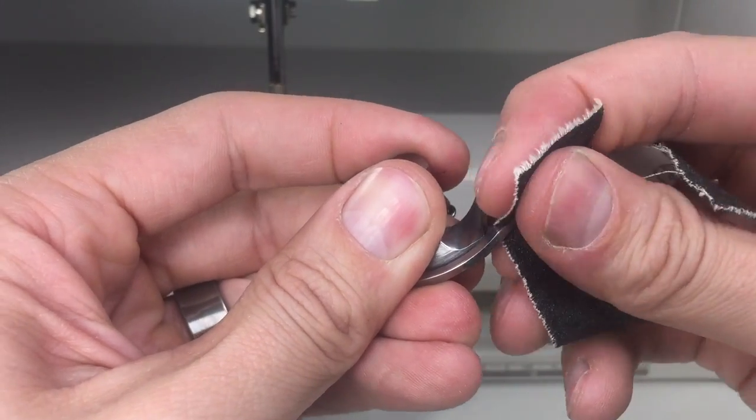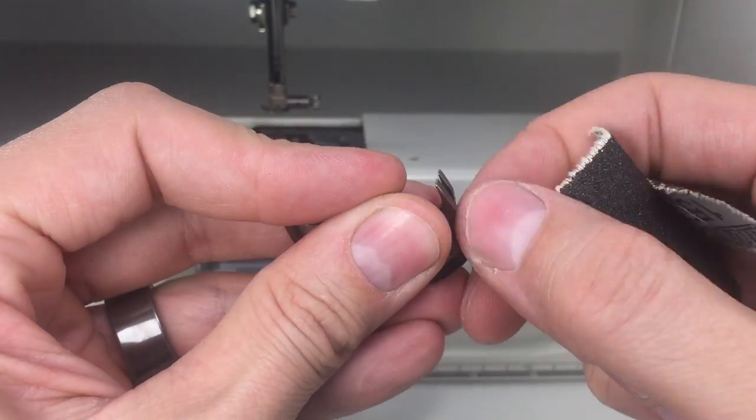If there are more significant burrs, we'll use emery cloth like this to knock them down, followed by a polishing wheel.